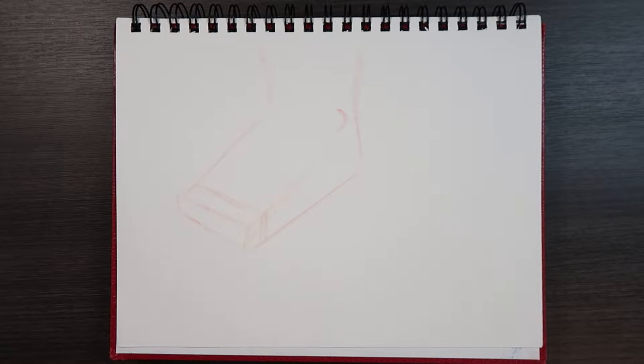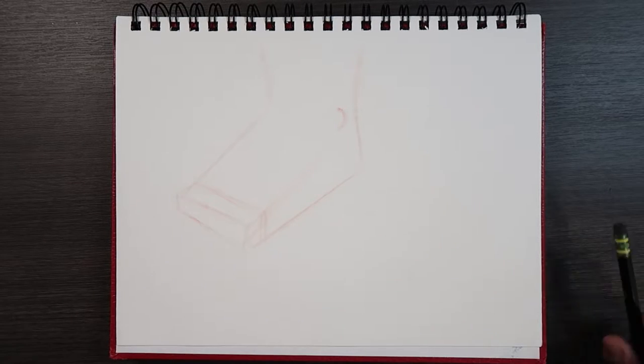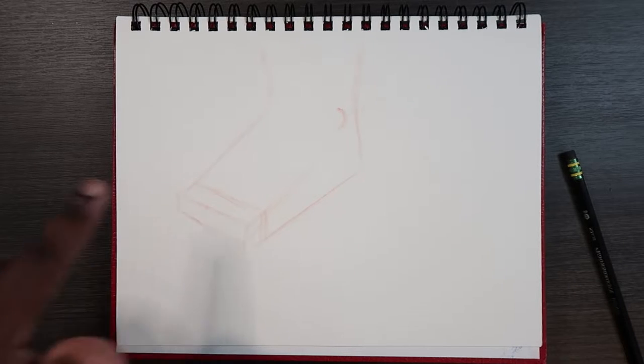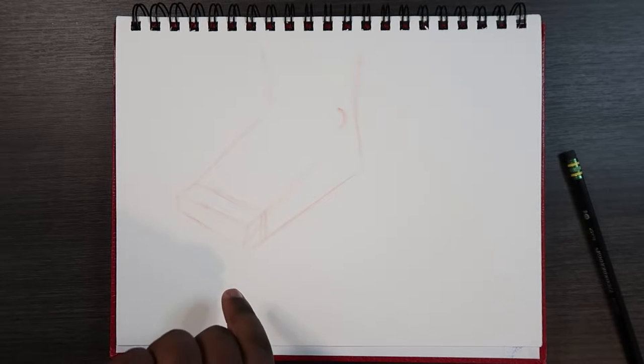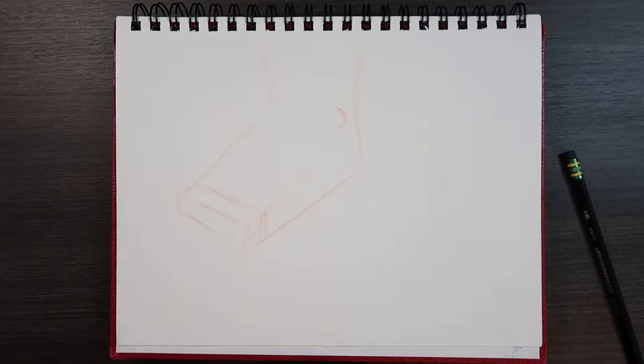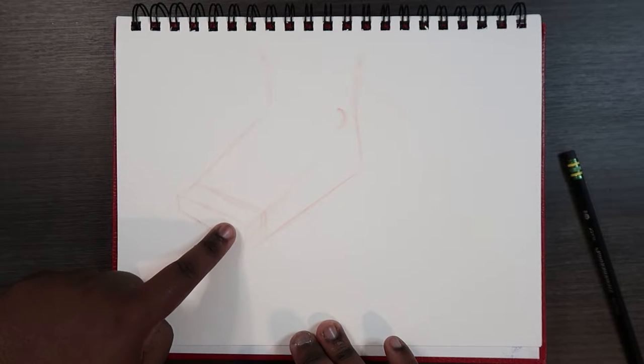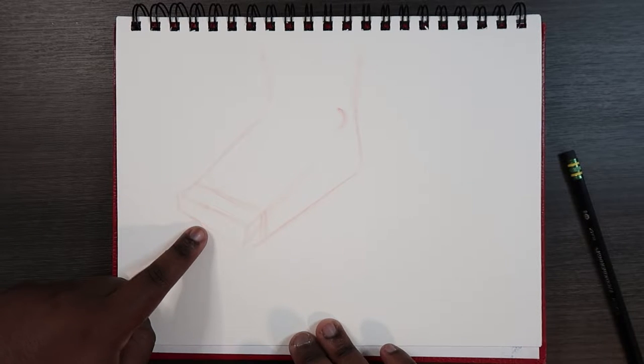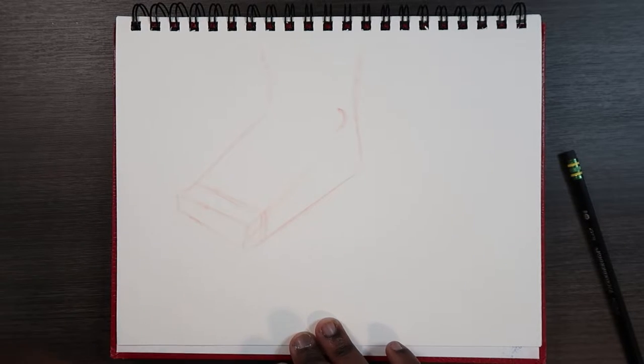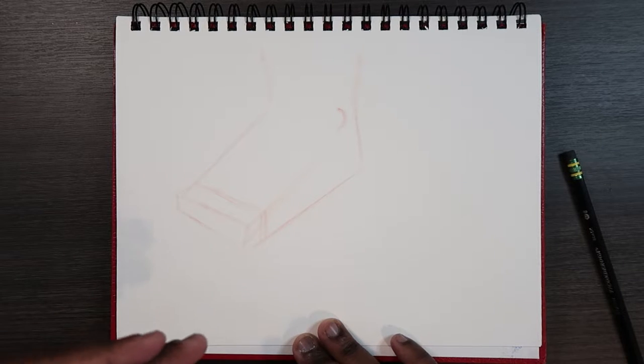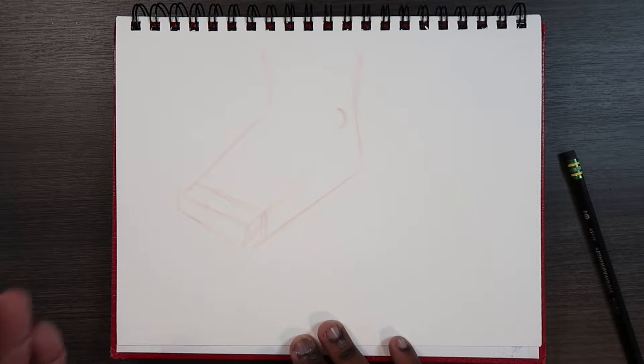Now let me grab my pencil. Before we actually draw the toes, I'm gonna take this shape and divide it into five pieces. But the five pieces that I divide it into, they're not gonna be equal because the big toe is obviously a different size than the pinky toe.